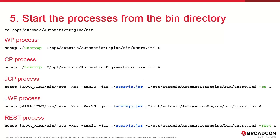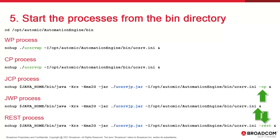JCP and JWP are started via java -jar and the ucsrvjp.jar file. To start the JCP, use –cp as an end option. JWP has no option. Finally, to start REST, we use the same command and JAR file but with the –rest option. For the purposes of this course, we won't start this process.